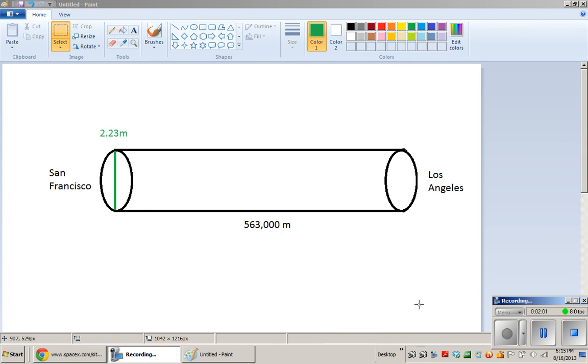So this is a very reductionist drawing of Elon Musk's tube. The inner surface area, from the inside of this cylinder to the other inside of this cylinder, the diameter is 2.23 meters and the length of it is 563,000 meters. We can use the formula for the surface area of the cylinder to figure out how much surface area that is.